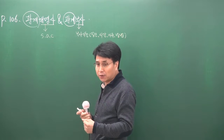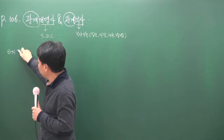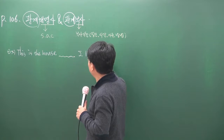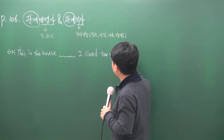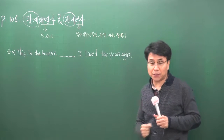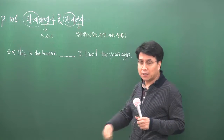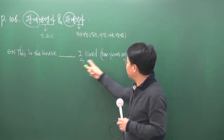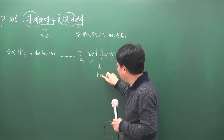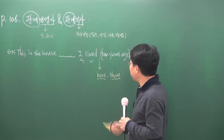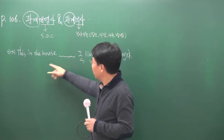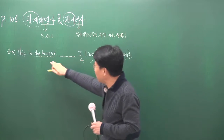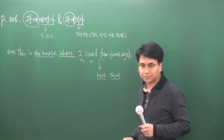예문을 보시면: This is the house ___ I lived ten years ago. 내가 10년 전에 살았던 집입니다. '거기에서, 어디에서' 이런 식으로 부사적 기능이 필요하니까 부사가 들어가는 거예요. 장소이니까 where를 쓰는 거예요.